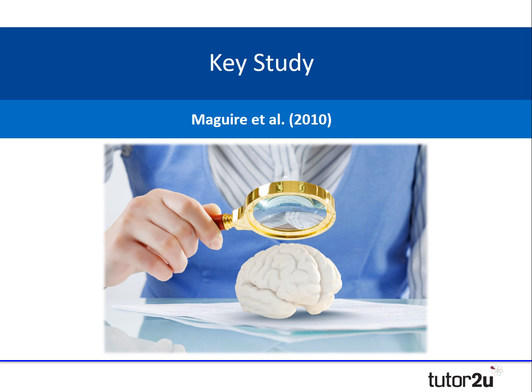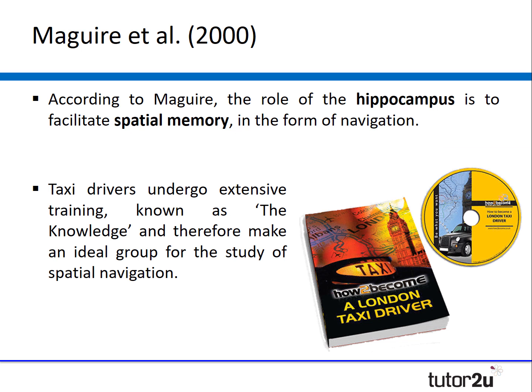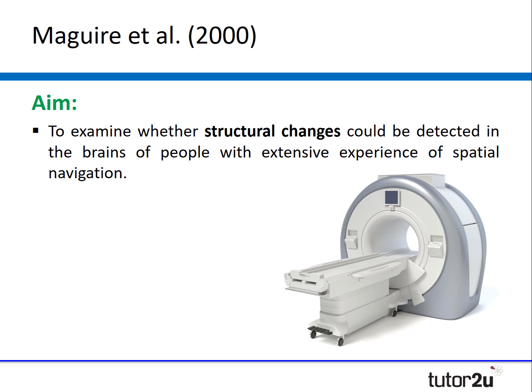Now let's have a look at the key piece of research by Maguire. According to Maguire, the role of the hippocampus in the brain is to facilitate spatial memory in the form of spatial navigation. Taxi drivers in London undergo extensive training, something known as the knowledge, and therefore made a really ideal group for the study of spatial navigation. The aim of Maguire's research was to look at structural changes and see whether they could be detected in the brains of people with extensive spatial navigation experience, such as the taxi drivers.